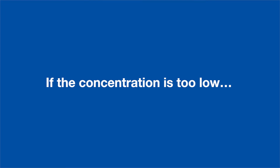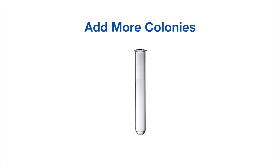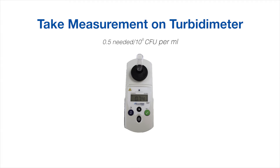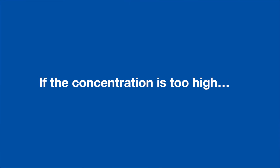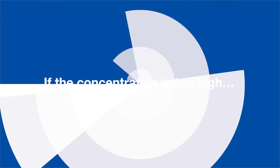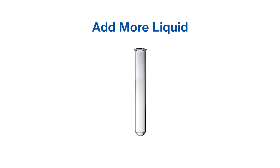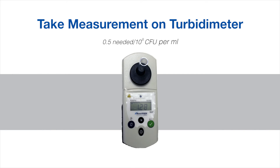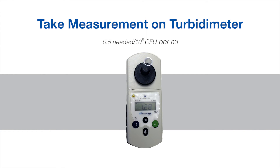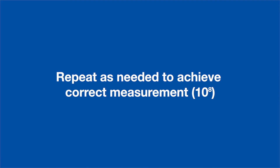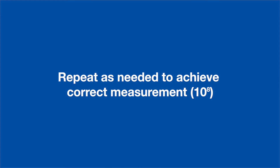If the concentration is too low, add more microorganisms and measure the turbidity again. If the concentration is too high, add more liquid and measure the turbidity again. Repeat as needed until you get a density measurement of 0.5 McFarland.